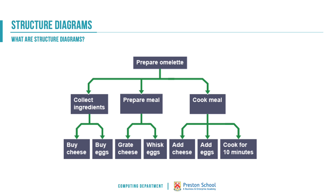It may be that all of those sections of work can be worked on at the same point in time. You'll see that we don't always just break down once — collect ingredients could then be broken down into buying cheese and buying eggs, and similarly with our other key sections.